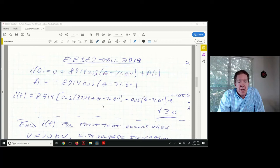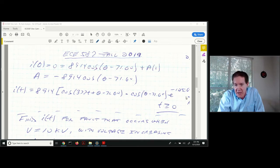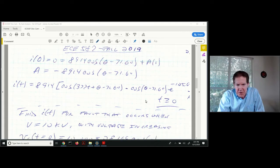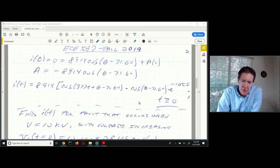When I put everything together, I can simplify things. I've got a common term: 8,914 times [cosine(377t plus theta minus 71.6 degrees) minus cosine(theta minus 71.6 degrees) times e^(minus 125.6t)]. This is pretty close to the final answer, although I haven't specified what theta would be yet.